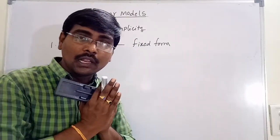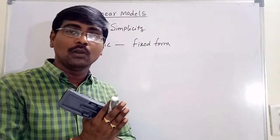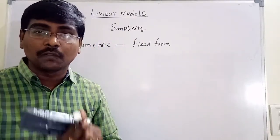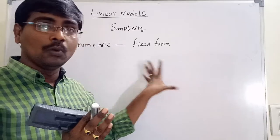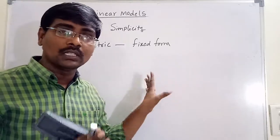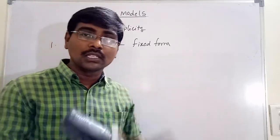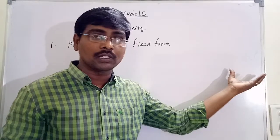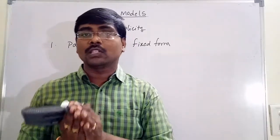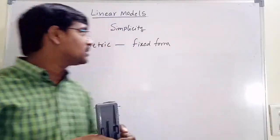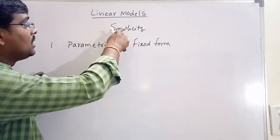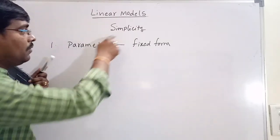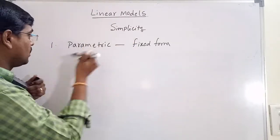Compared to tree models and rule models, the structure is not fixed in advance. In rule models and tree models, the structure is not fixed — depending on the input, the structure changes. But in linear models, the structure is fixed. This is one point for the simplicity.